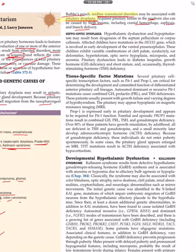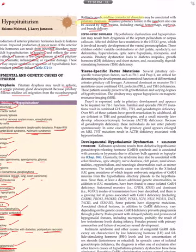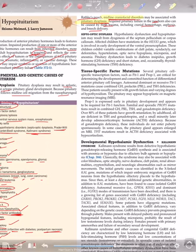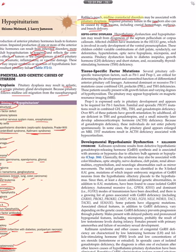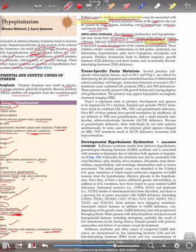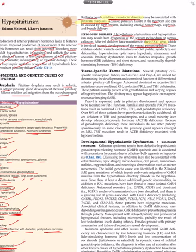Septo-optic dysplasia involves hypothalamic dysfunction leading to hypopituitarism, due to dysgenesis of the septum pellucidum or corpus callosum. Affected children have a mutation in the HESX1 gene, which is involved in early development of the ventral prosencephalon. These children exhibit cleft palates, syndactyly, ear deformities, hypertelorism, optic nerve hypoplasia, micropenis, and anosmia. Pituitary dysfunction leads to diabetes insipidus, growth hormone deficiency, short stature, and TSH deficiency.